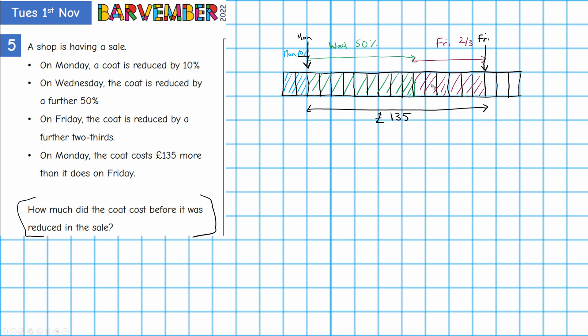...7, 8, 9, 10, 11, 12, 13, 14, 15. I know that 15 parts, 15 parts equals £135. Therefore £135 divided by 15 will give me the value of each part which is £9.